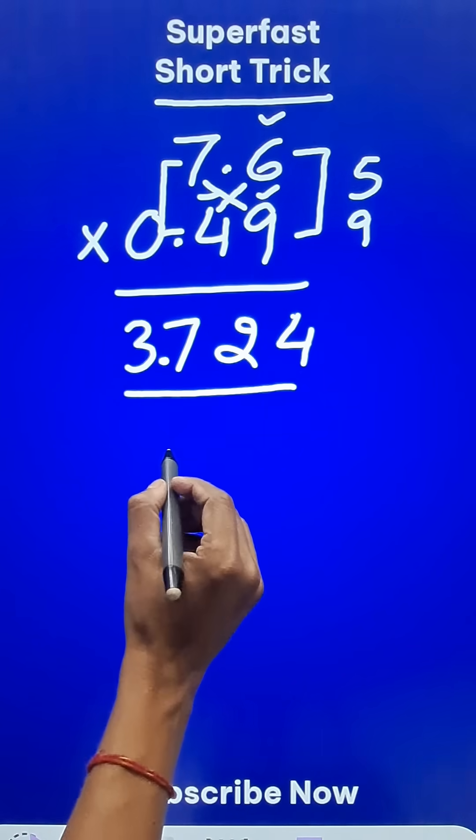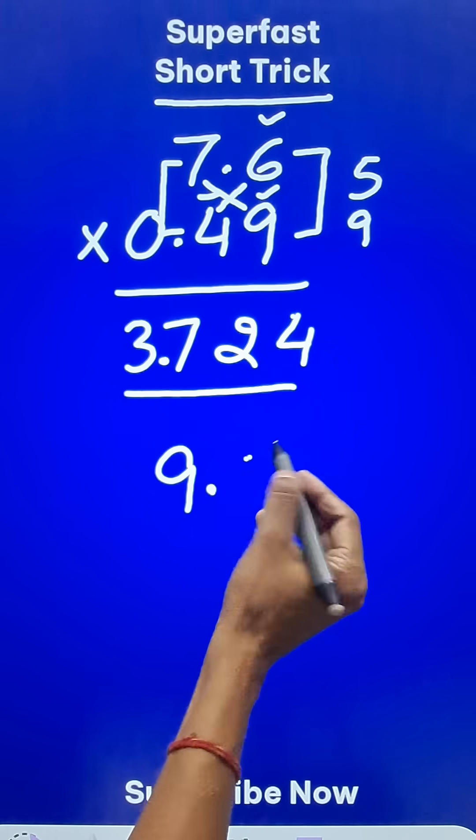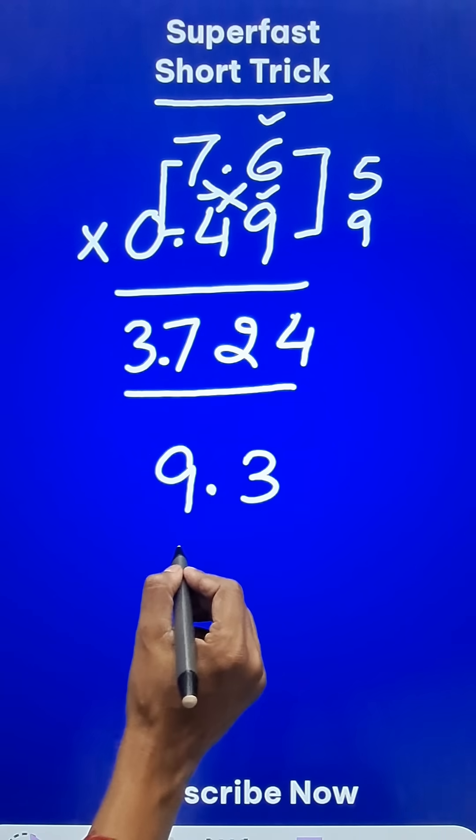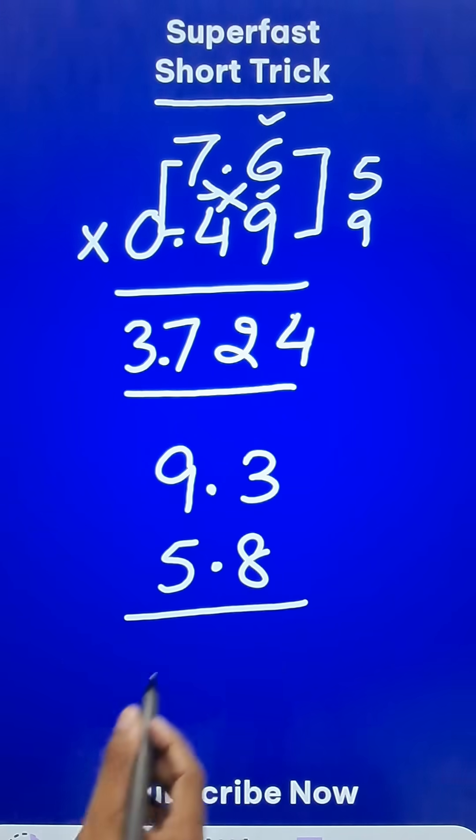Let's take some other numbers. Suppose you have 9.3 and let's have 5.8. Now I want to multiply these two numbers.